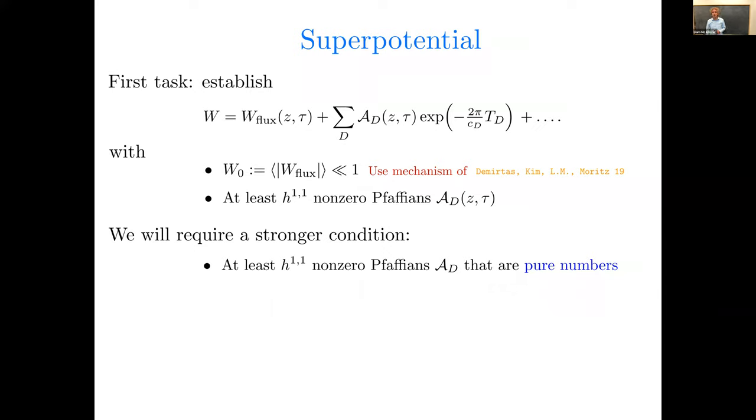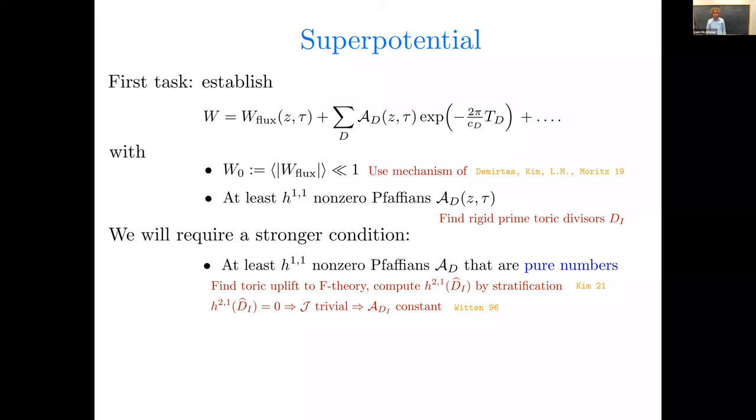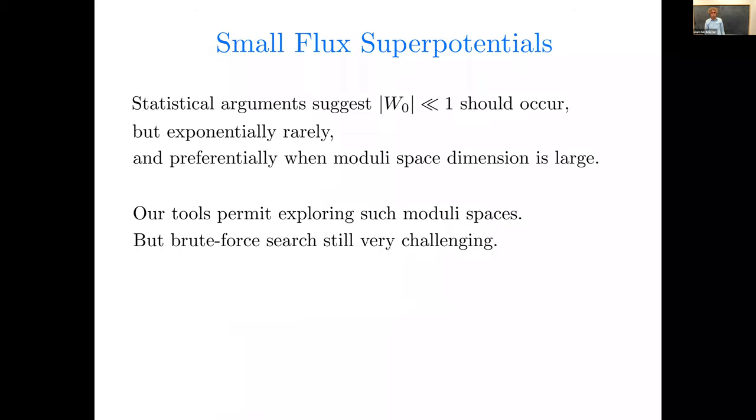Actually, we're going to require a much stronger condition. We're going to insist that there are at least H11 independent Pfaffians that aren't just non-zero, but that are pure numbers with no moduli dependence. So to get a small flux superpotential, we'll use a mechanism that I'll review. To find enough non-zero Pfaffians, we'll just look around for rigid prime toric divisors. But for this last stronger condition to find non-zero Pfaffians that are pure numbers, we're going to have to work a little harder. We're going to find a toric uplift to F-theory, compute H21 of the uplift of the divisor D, and from that infer the properties of the intermediate Jacobian, show the intermediate Jacobian is trivial, and hence, by a result of Witten on Pfaffians, are pure numbers, which I'll just call Pfaffian numbers.